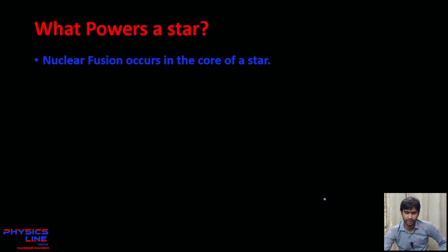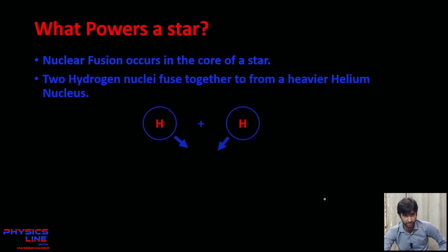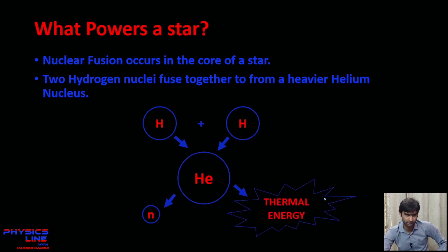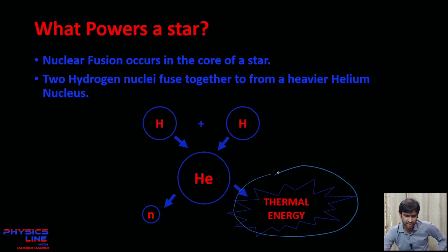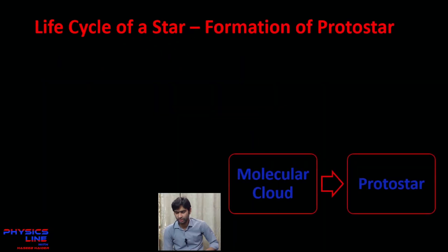To briefly summarize: nuclear fusion occurs in the core of a star where hydrogen nuclei fuse together to form a heavier, more stable helium nucleus. This process causes the emission of some neutrons and thermal energy. This thermal energy is the source of power for a star. Now let's get started with the life cycle of a star.